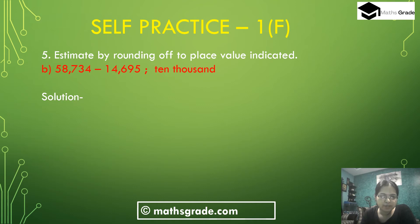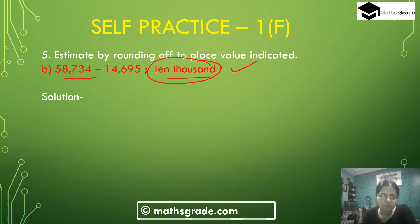Now question number 5, part B: estimating by rounding up to the place value indicated. We have 58,734 minus 14,695, rounded to the nearest 10,000. We have to round both numbers to the nearest 10,000.